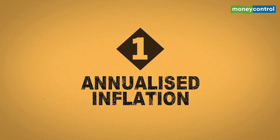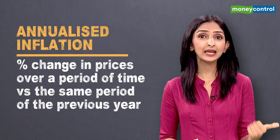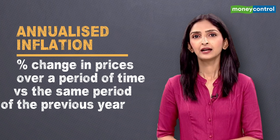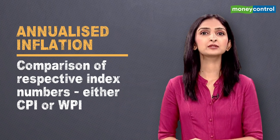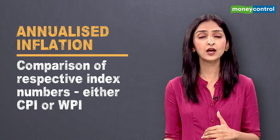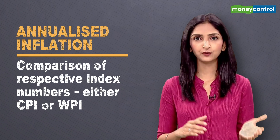Number one: annualized inflation. It's the percentage change in prices for a period compared to the same period of the previous year. It's calculated by comparing the respective index numbers — whether the consumer price index or the wholesale price index — for the two periods. India's inflation target, along with that of other countries, is spelled out in these terms.